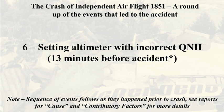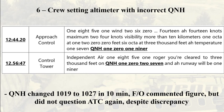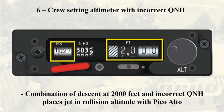Setting the altimeter with the incorrect QNH. In the cockpit, the first officer briefly questioned the QNH figure of 1027 he had received from ATC. The captain confirmed having heard the same figure on the radio. The first officer was likely surprised by the QNH change from 1019 to 1027 in just 12 minutes. Despite the discrepancy, he did not question ATC again to resolve the issue. The combination of descent at 2,000 feet and the incorrect QNH would place the jet on a collision course with Pico Alto.